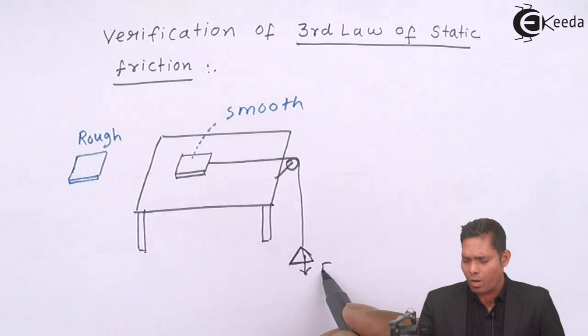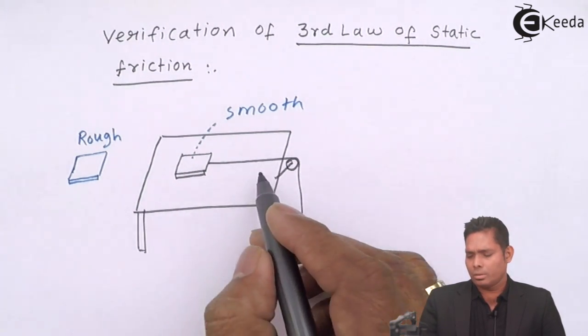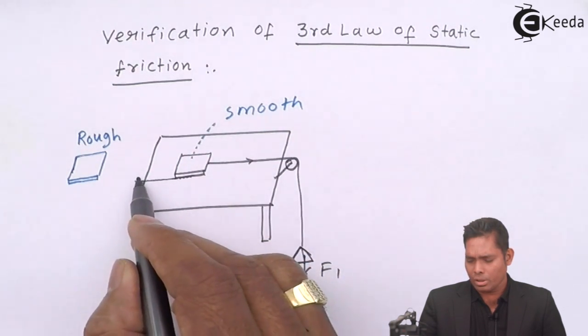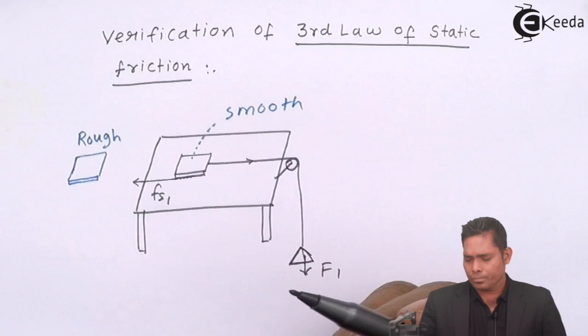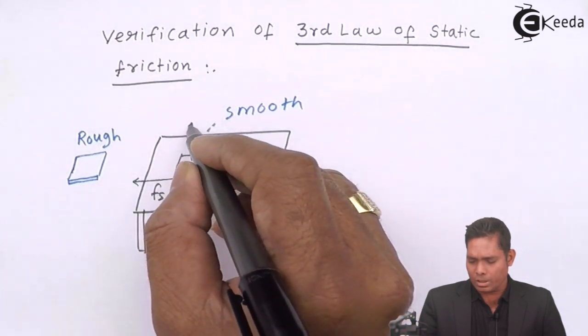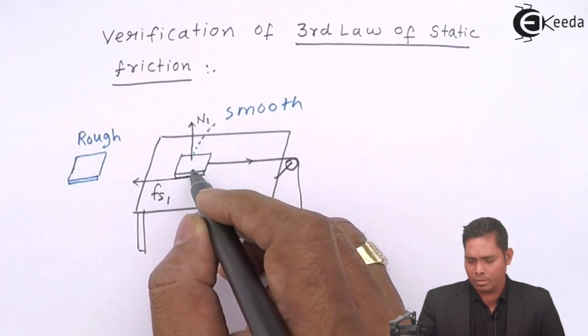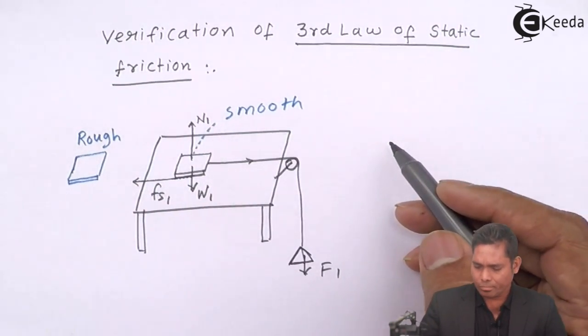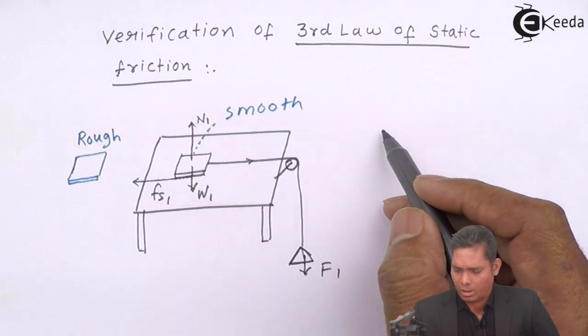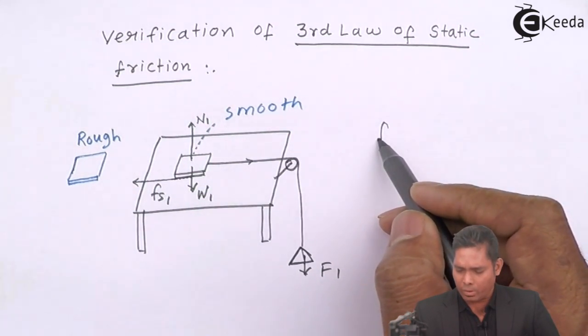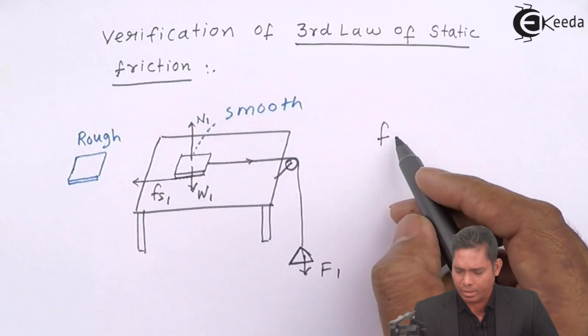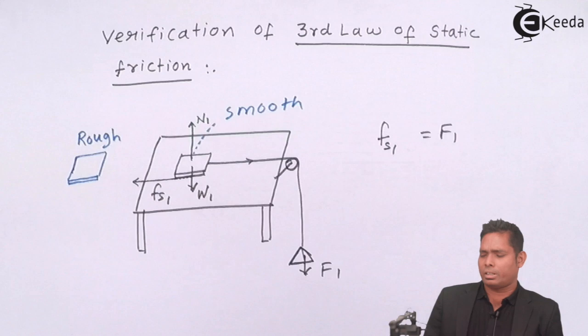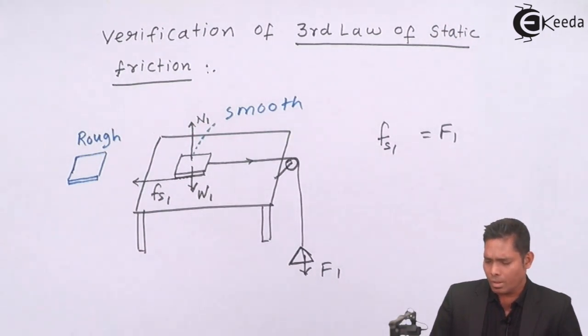The friction that is produced is fs1. In this case, the normal reaction is n1 and the weight is w1. So I find that this fs1 is equal to f1. In this case, I'm interested in fs1.